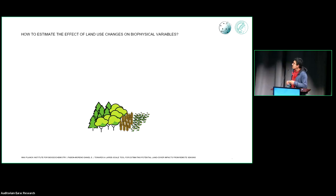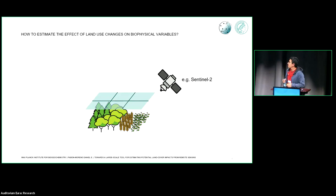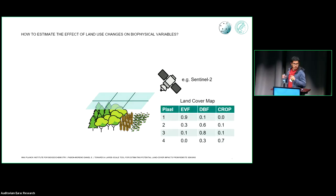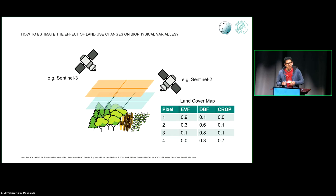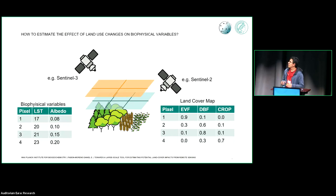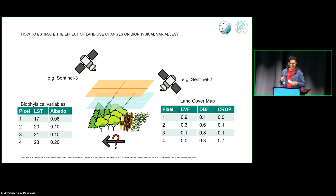To do this, here I have a representation of a landscape with different vegetation types. We can use remote sensing information — in this case Sentinel-2 — to estimate the percentage cover of each vegetation type for a specific pixel cell. Then, using other satellite missions such as Sentinel-3, we can estimate the land surface temperature or the albedo for each pixel cell. The question is: how do we disentangle this information and estimate the contribution of each PFT class into the signal?